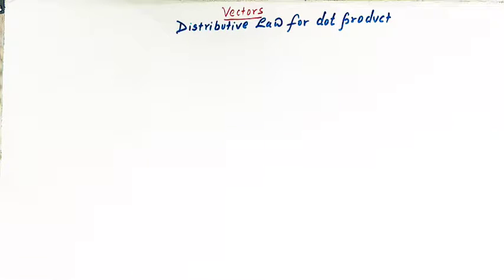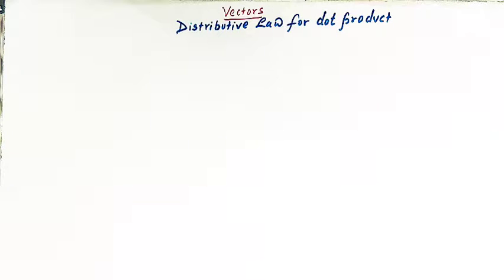Hello viewers. In today's session we are going to discuss an important property of dot product, that is the distributive law for dot product. In our earlier video we discussed the associative law for vector addition, and in this session we are going to prove or derive the distributive law for scalar product. So let us start.